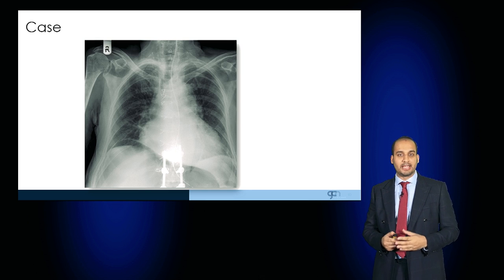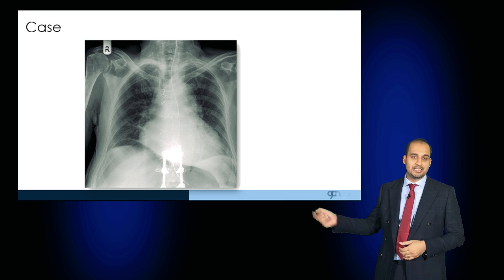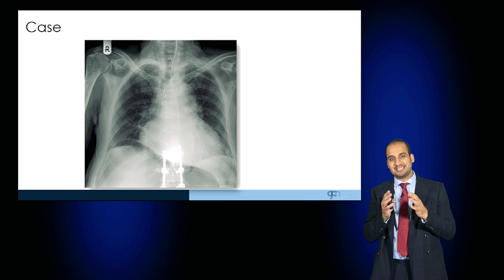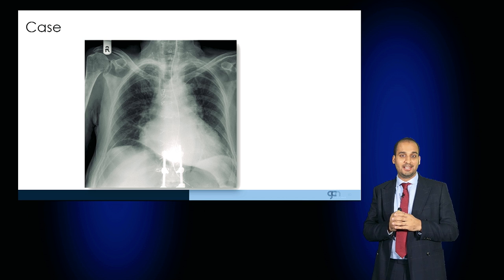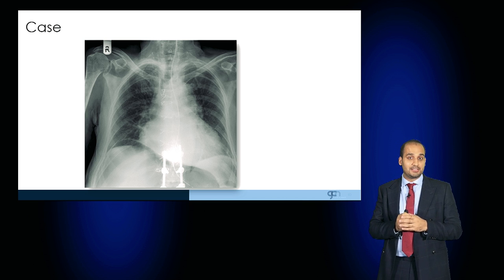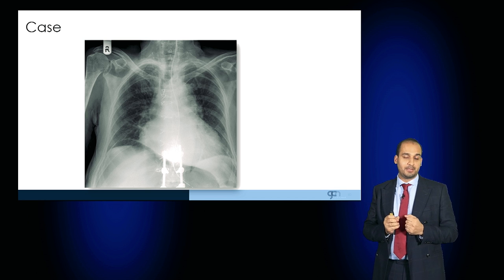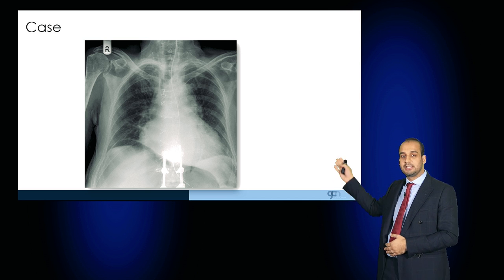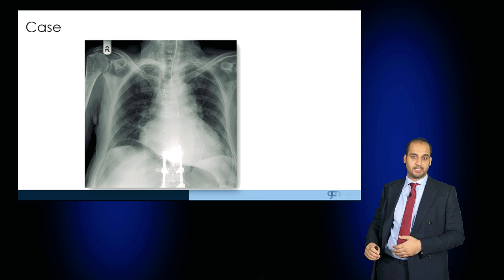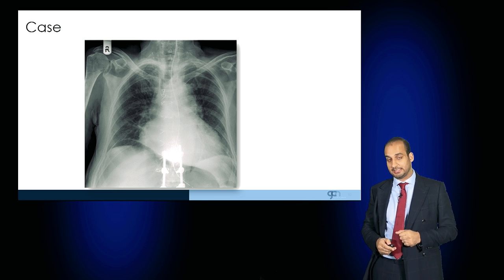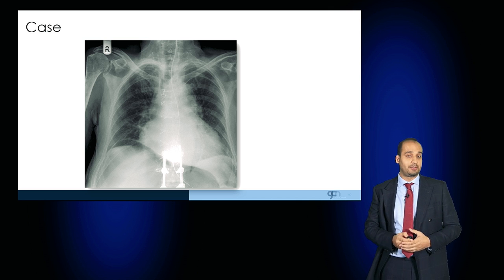Have a look at this chest radiograph — there are a number of foreign bodies, but I want you to see these ring-like metallic structures. These are post-cardiothoracic surgical sternotomy wires which are keeping the sternum together. You can also see that the patient has had some spinal surgery with spinal rods visible. And this patient also has an NG tube in situ — quite a good radiograph demonstrating an array of foreign bodies.